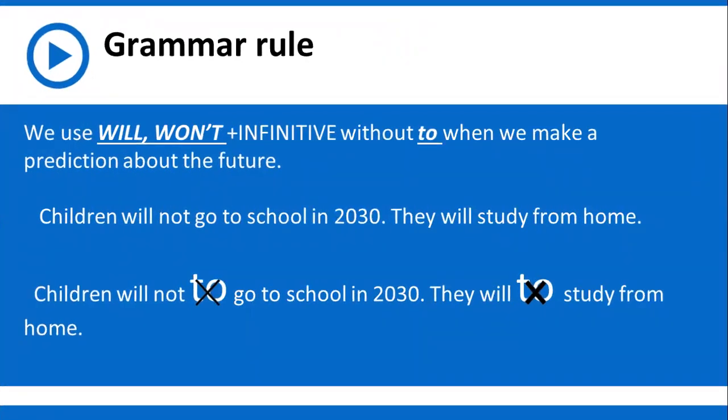Here we have a short grammar rule about using will and won't. We use will and won't with infinitive without to. For example, children will not go to school in 2030. They will study from home. In the following sentence, you can see to is crossed out before the main verb because that's wrong.